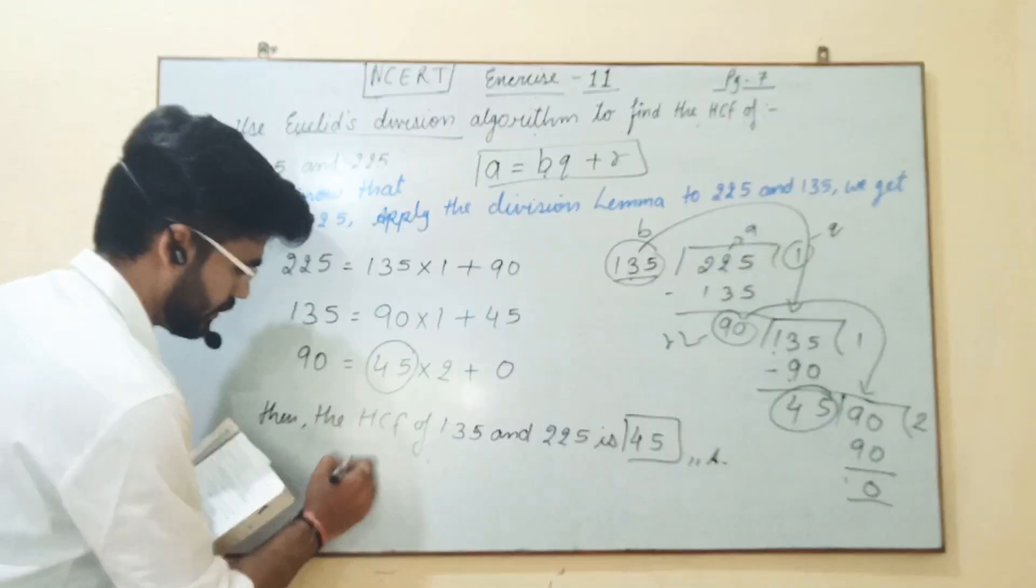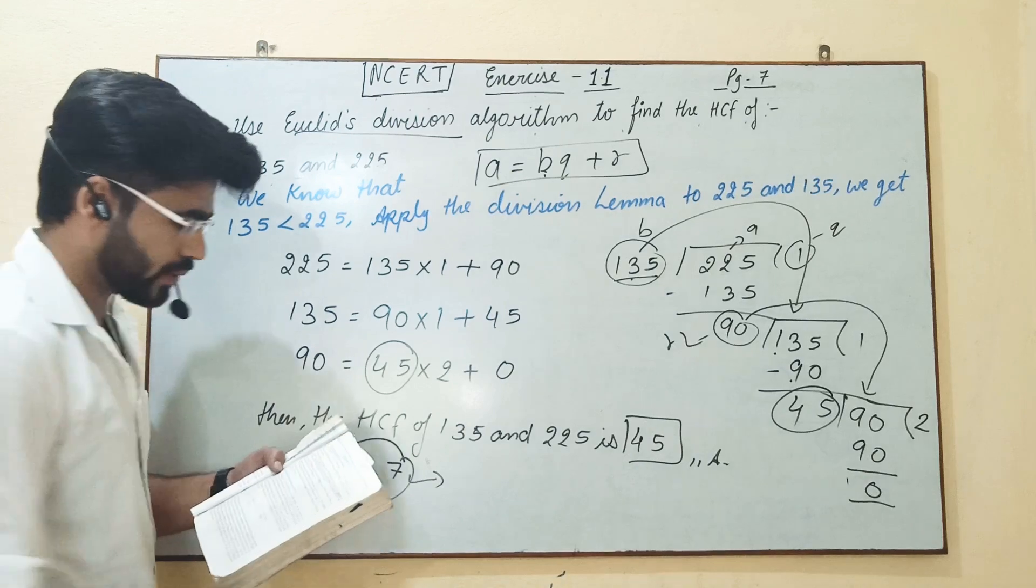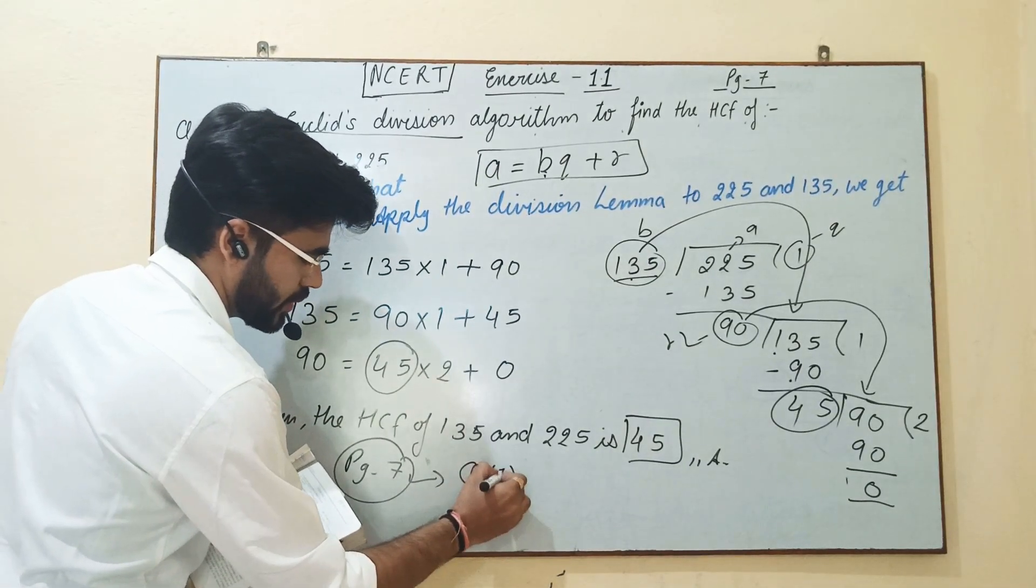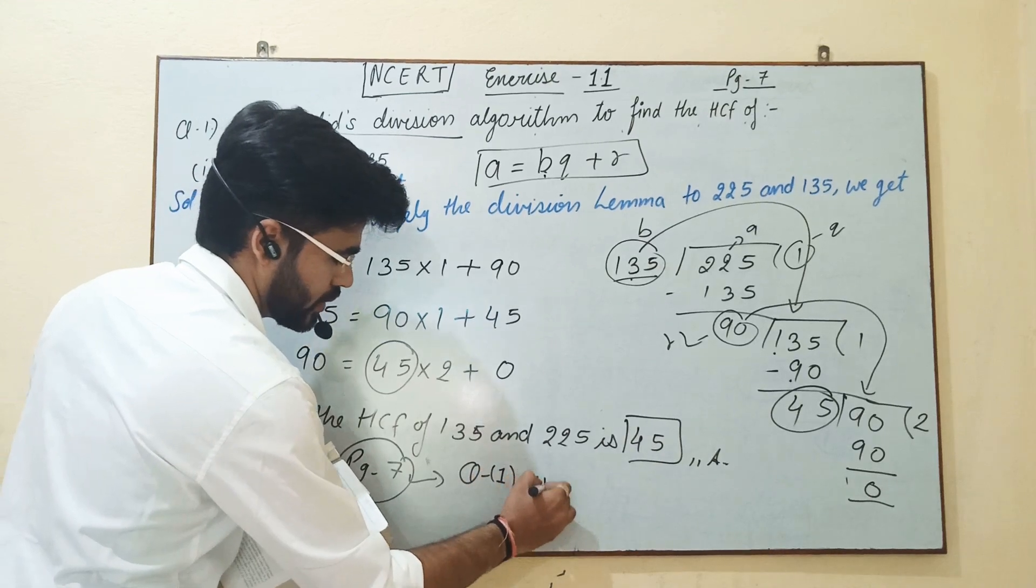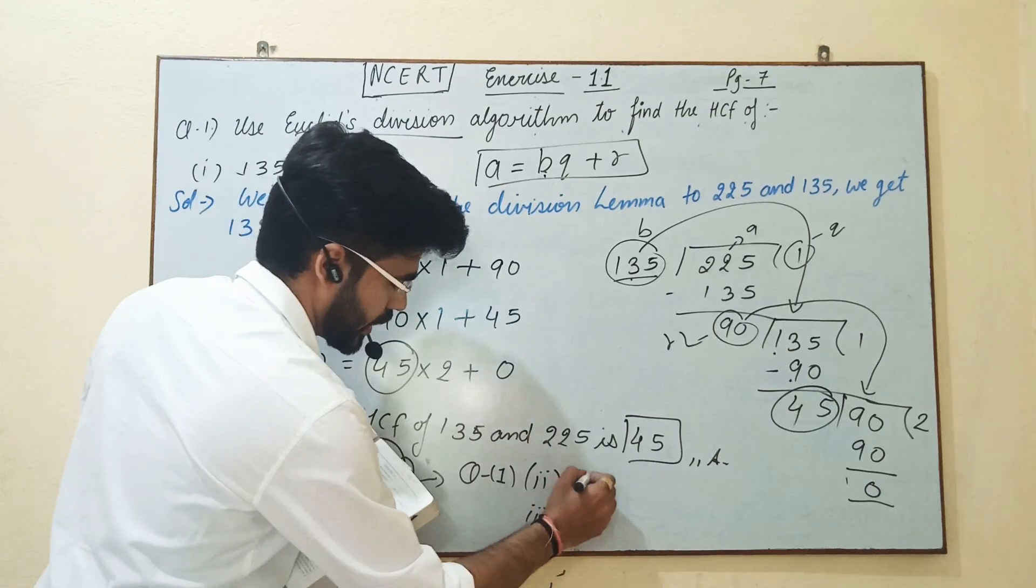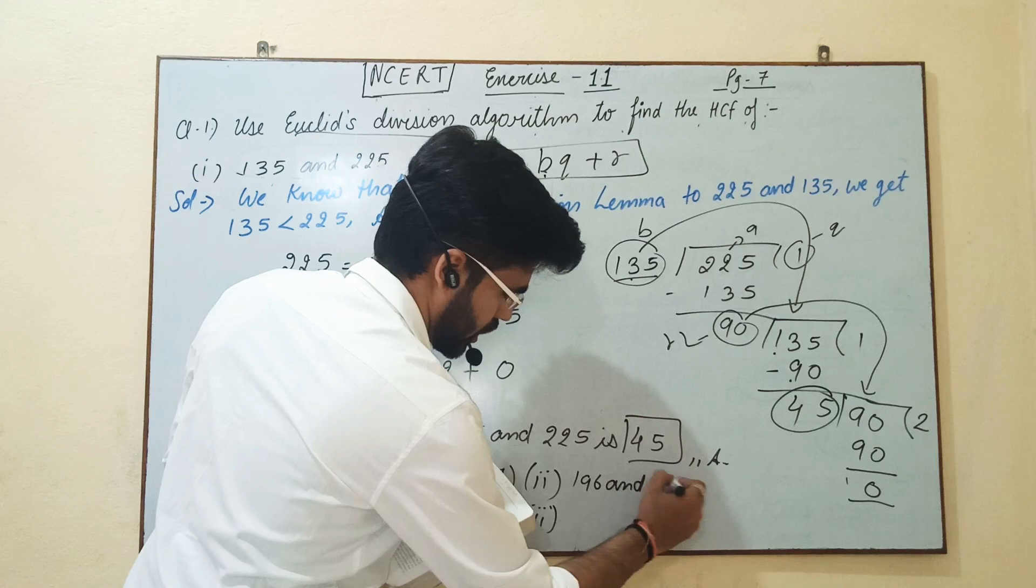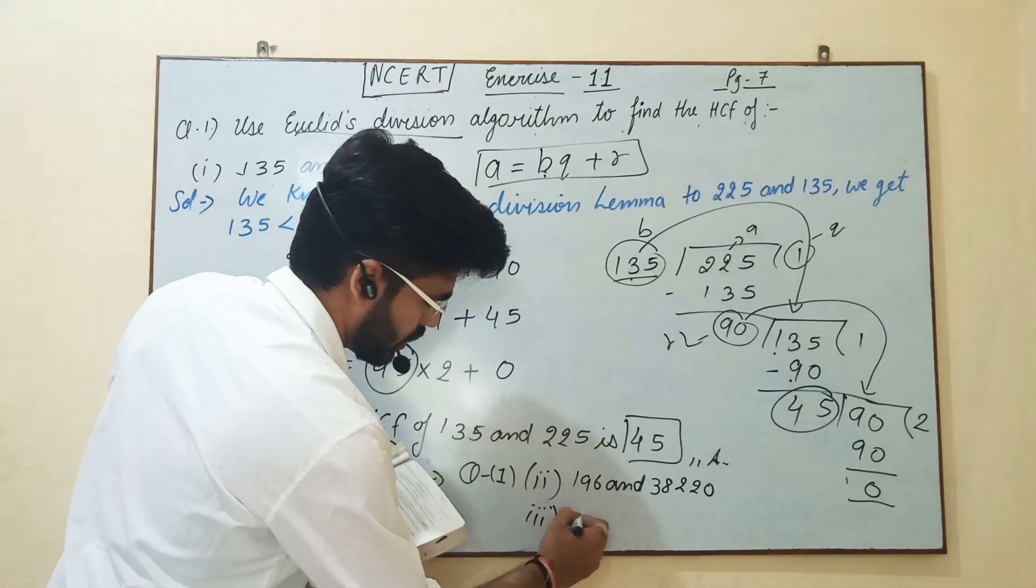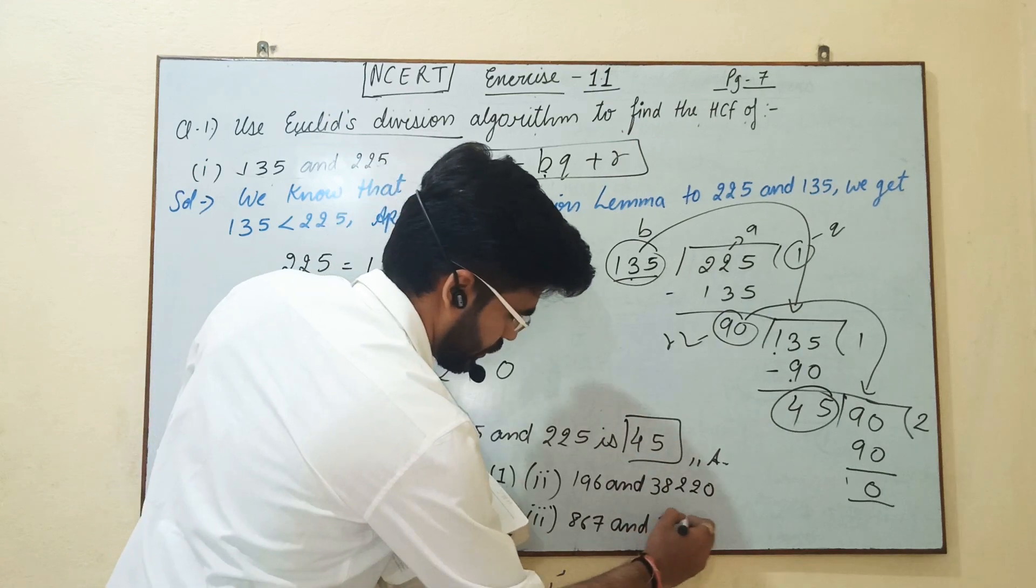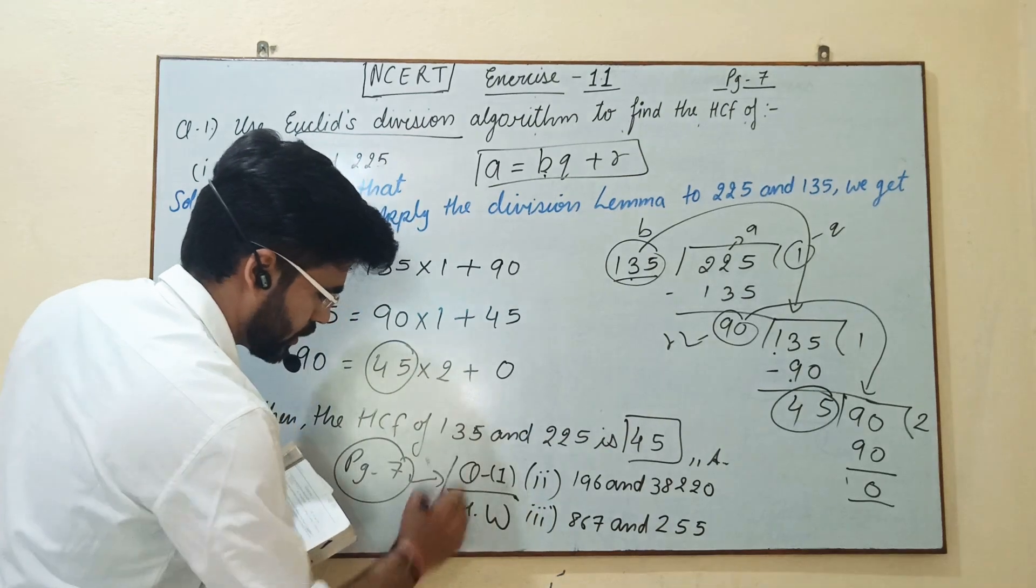Page number 7, question number 1, case second part and the third part. You have 196 and 38200, and 867 and 255. These two sums are homework for you.